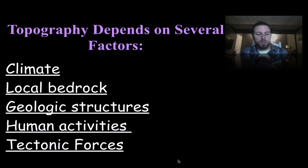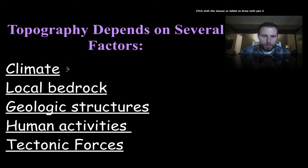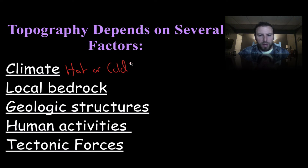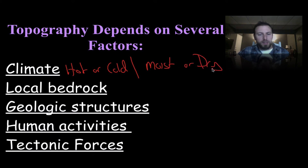The first one we're going to go into is climate. Remember back from the weathering unit that climate affects the type of weathering. Whether it's hot or cold will affect the type of weathering we have and the rates of that weathering, and whether it's moist or dry will also affect the type of weathering.